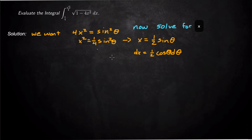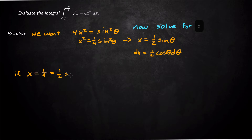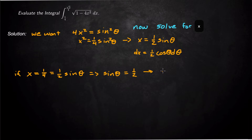We're going to substitute these in, but we're also going to change the bounds. If x = 1/4, then ½sinθ = 1/4. Multiplying both sides by 2, sinθ = 1/2. What angle between 0 and π/2 has a sine of 1/2? That means θ must be π/6.